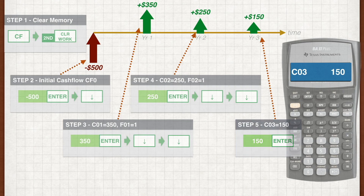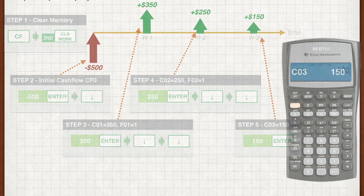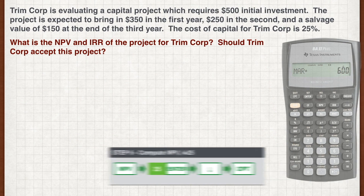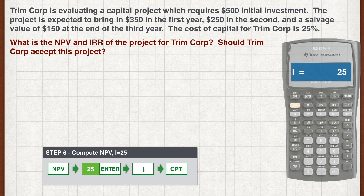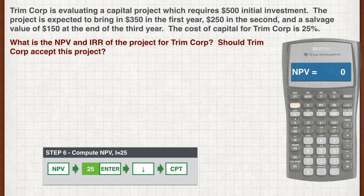You have now entered all the cash flows and the next step is to extract the answers from the calculator. To compute NPV, the calculator needs to know what the discount rate is. When you hit the NPV button, it first prompts you for the interest rate. Key in 25, which represents a 25% rate, and hit enter and the down arrow key to move on. Now you see NPV written on your calculator, but it's not computed yet. Simply hit the compute button and you'll see your answer of $16.80.